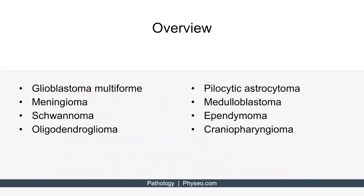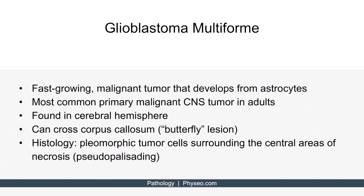Here's our overview slide of the brain tumors we'll be discussing. Let's begin with glioblastoma multiforme. This is a fast-growing malignant tumor that develops from astrocytes, which are glial cells that regulate the transmission of electrical impulses within the brain. It's the most common primary malignant CNS tumor in adults and is found in the cerebral hemisphere, which can cross the corpus callosum in the shape of a butterfly, known as a butterfly lesion. The term pseudopalisading describes the central areas of necrosis surrounded by pleomorphic tumor cells.